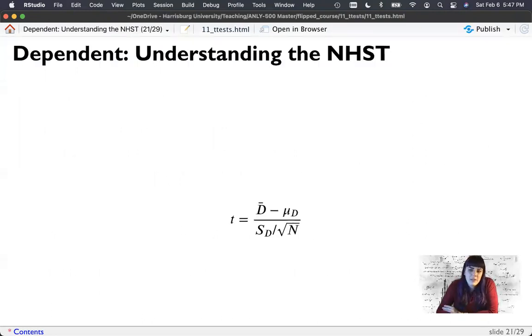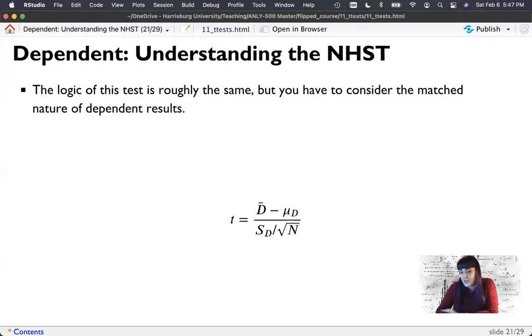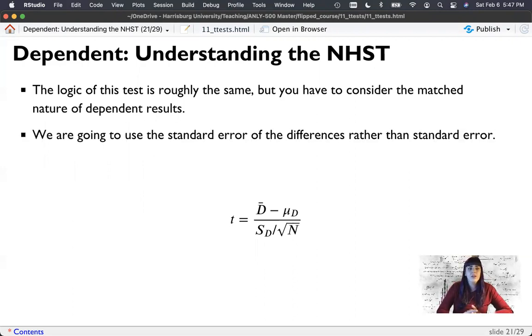So what is happening in a dependent test in comparison to independent? Well, the logic is roughly the same, but we have to consider the peopleness in the study or the matched nature of those results. That I mean that the same people are tested twice. So that violates the assumption of independence and we have to do something about that. So we'll use the difference scores. The simplest way to deal with independence when we have a binary independent variable is just subtract. What's the difference between your cloak and no cloak weeks? You end up with one column of data.